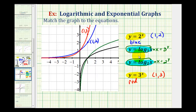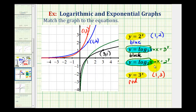Since Y equals log base 3 of X and Y equals 3 to the power of X are inverse functions, if the exponential contains the point (1, 3) then the inverse must contain the point (3, 1) — which lies on the black function. Similarly, since Y equals 2 to the X and Y equals log base 2 of X are inverses, the log function must contain the point (2, 1), which we can see is on the green function. Therefore Y equals log base 2 of X is the green graph.